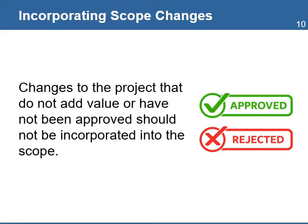Adapting the scope is a step with the sole purpose of incorporating changes that will provide improvements and increase the project success. Changes to the project that do not add value or have not been approved should not be incorporated in the scope. Only changes that add value, increase the chances of success, or increase the benefits are worth considering. There is no point in changing the scope if the changes will not result in a benefit to the project and the beneficiaries.